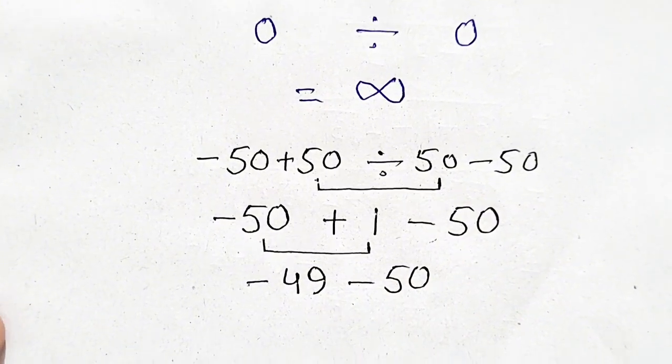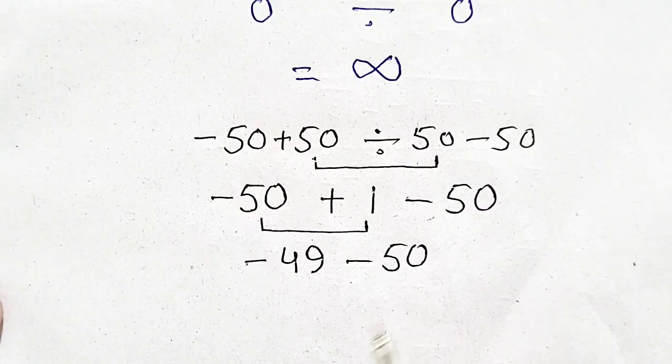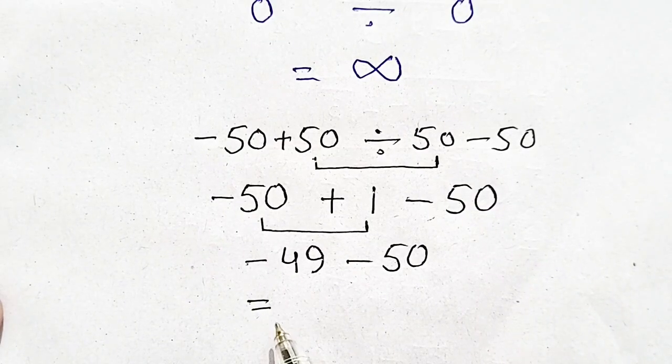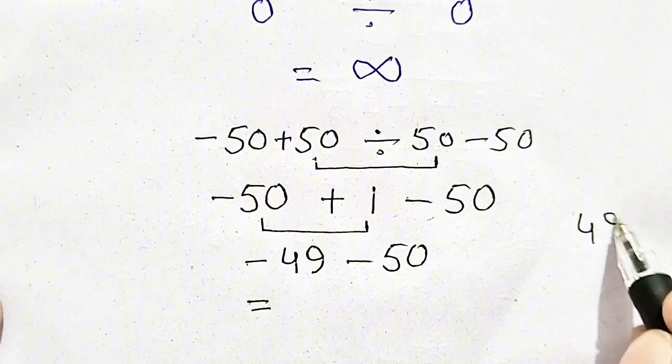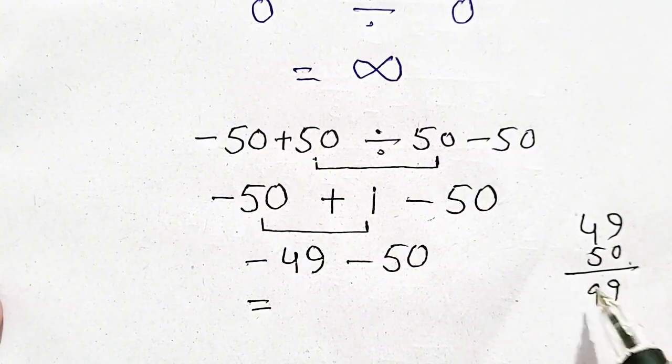Minus 49 minus 50 will be equal to 49, 50... 9, 9.